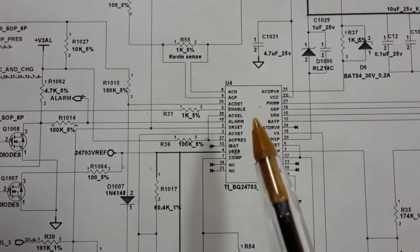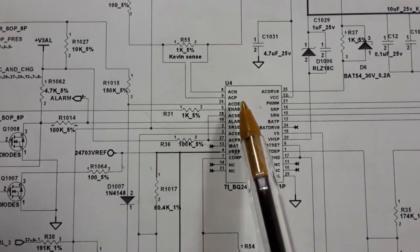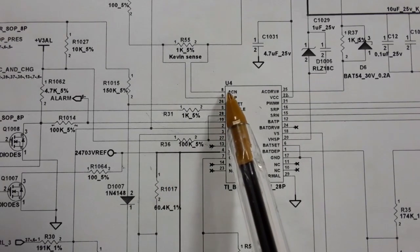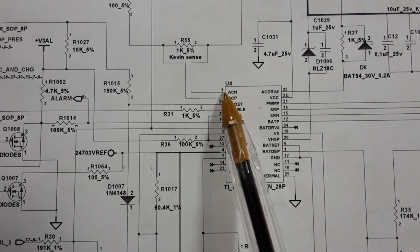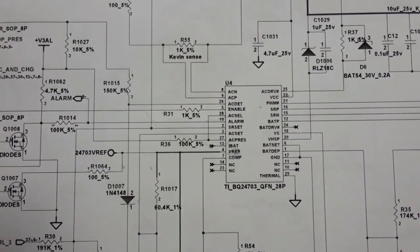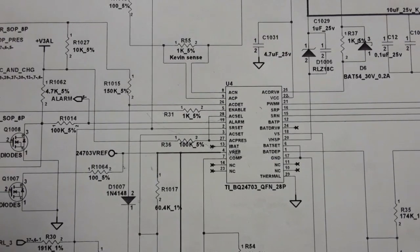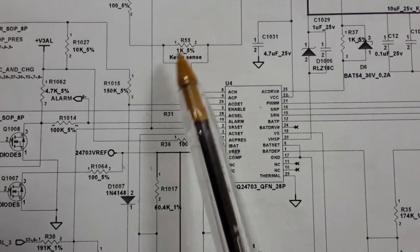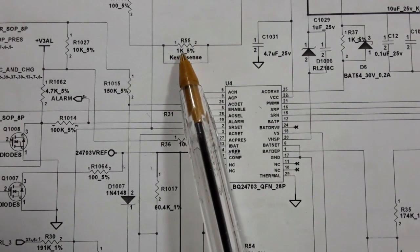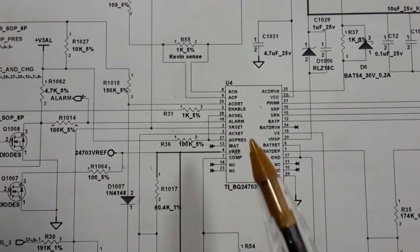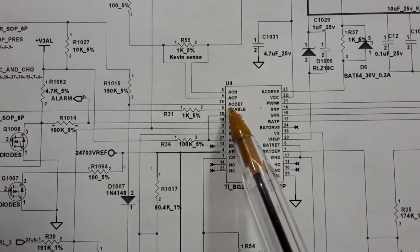The charge IC has many pinouts. Pin number eight is ACN and ACP — these two pins connect to the cable sense or current sense resistor. You will always find this resistor at the beginning of every power system on the motherboard. Its purpose is to control the amount of current. Its reference is R55.